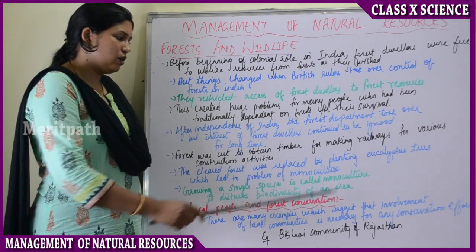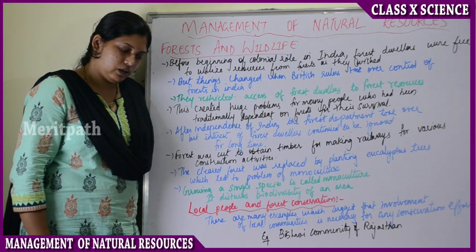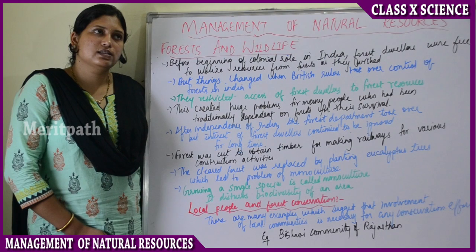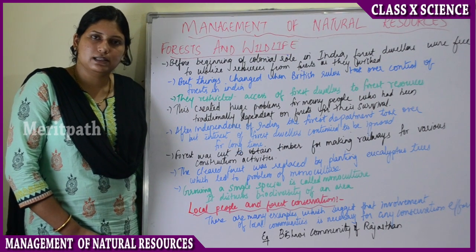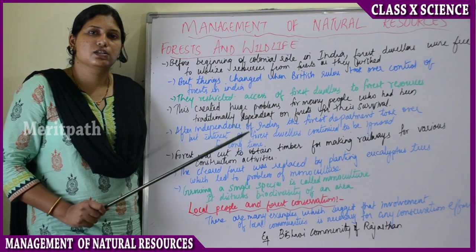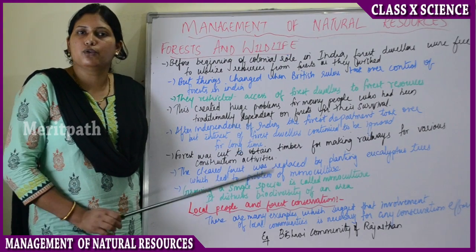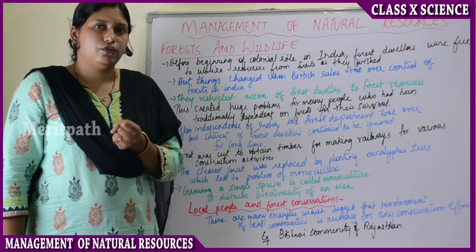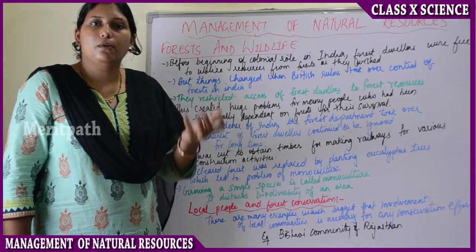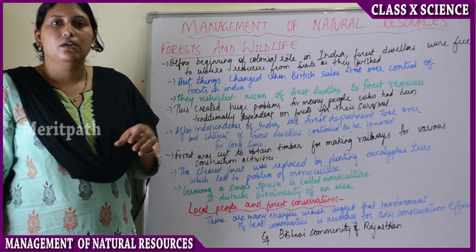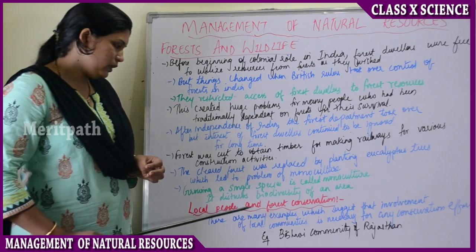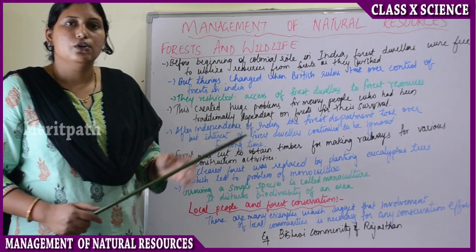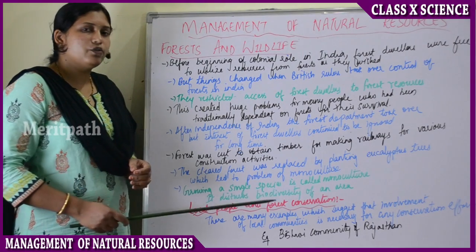Growing only eucalyptus disturbed the biodiversity of the area. Biodiversity includes the variety of plants, insects, wild animals, and birds living there. These creatures specifically depend on certain varieties of trees for nests and burrows. Since eucalyptus is a medicinal plant with a strong oil smell, most animals and birds could not build nests on it or bear living near it, causing some species to die.